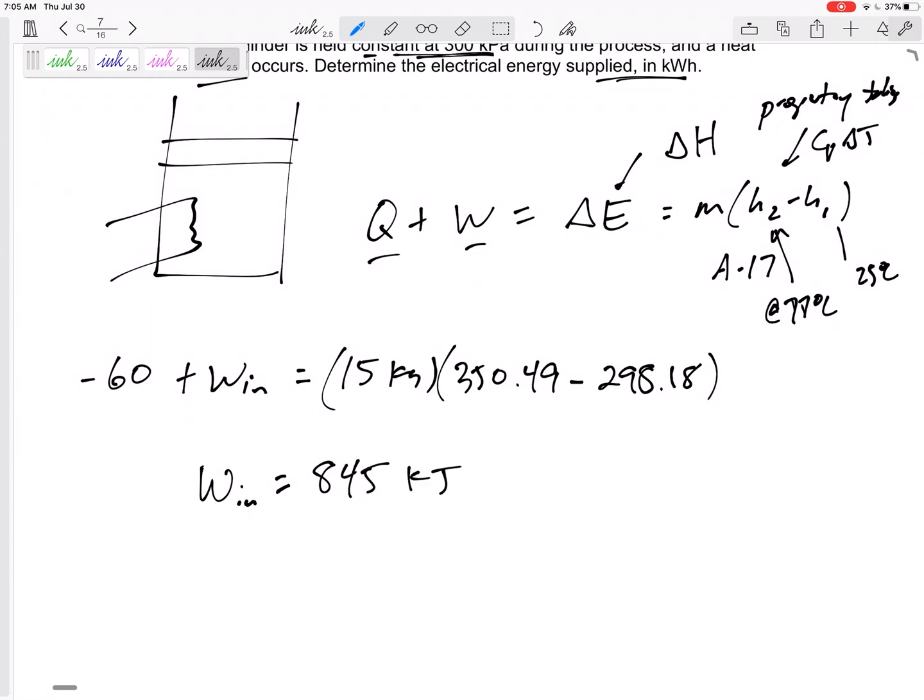Okay. Try CP delta T. I bet, especially with such a small temperature change, I bet you get something very, very close to 845 kilojoules. It didn't want kilojoules. It wanted kilowatt hours.